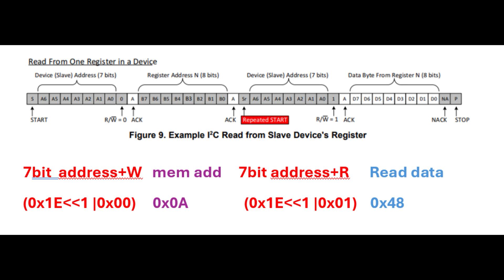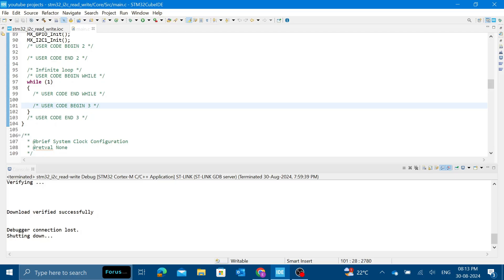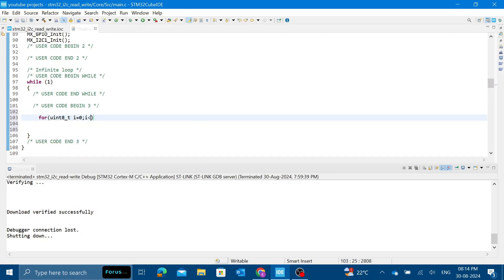In terms of communication flow: I first do a write operation specifying the memory register I want to read from — that's the 10th register. Then I perform an I2C read operation with a repeated start. From that, I should receive the data stored at that memory address, which is 0x48.